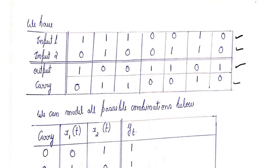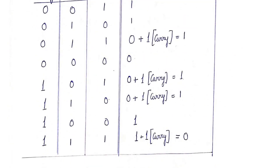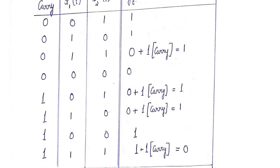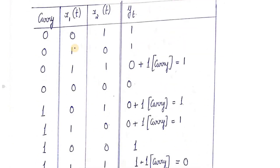Now let's see what are the possible combinations we can model. If we don't have a carry, x1 and x2 can take values: 0,1 or 1,0 or 1,1 or 0,0. These are the possible values x1 and x2 can take at any point. If we don't have a carry we put it as 0, and if we have a carry we put it as 1.